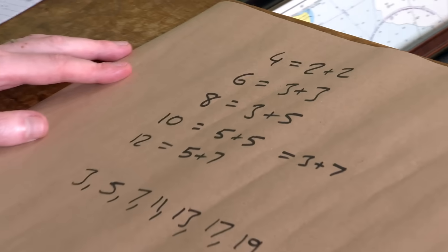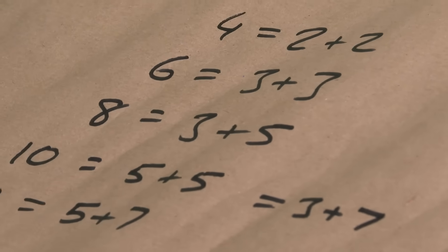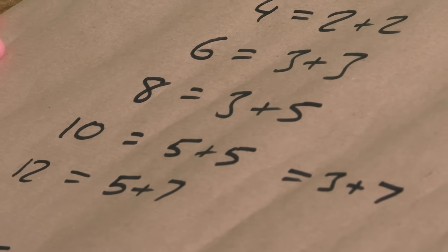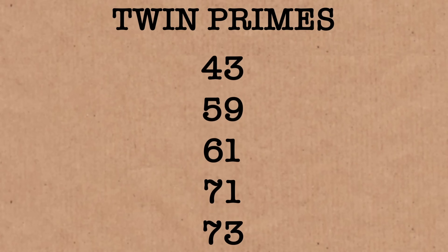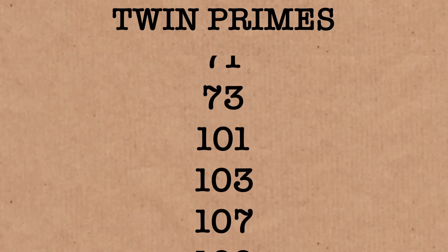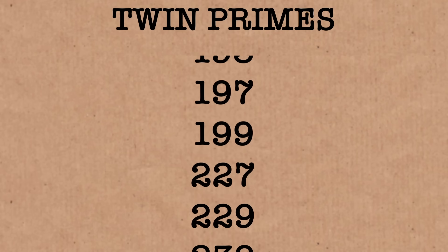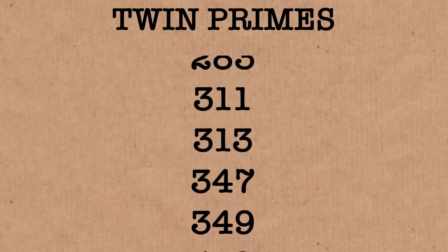So let's try an even number using just twin primes this time. Some of these are already done — 6 is already done with twin primes, 8 was already done with twin primes, so was 12. You can use the same twin prime; we're just picking from the sequence of twin primes. They don't have to be a twin prime pair — they can just be from anywhere in that sequence.